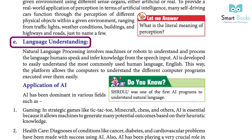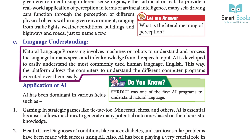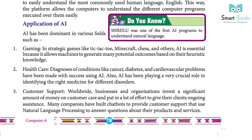E. Language Understanding: Natural Language Processing involves machines or robots understanding and processing the language humans speak, and inferring knowledge from speech input. AI is developed to easily understand the most commonly used human language, English. This allows the platform to help the computer understand the different computer programs executed over it. Did you know? SHRDLU was one of the first AI programs to understand natural language.